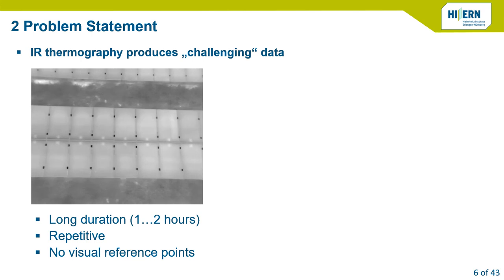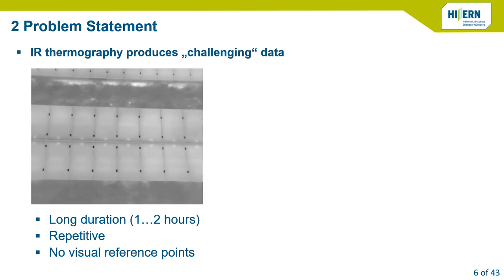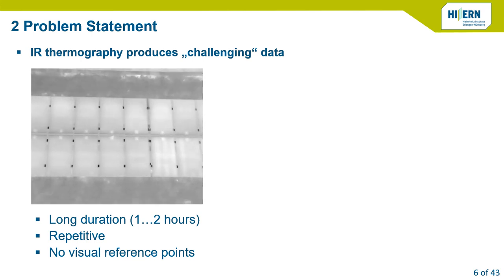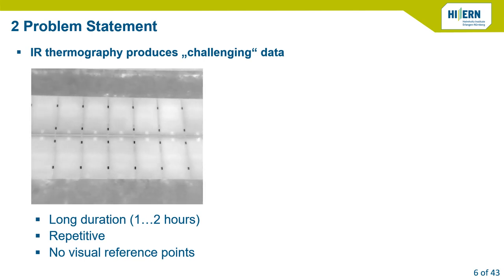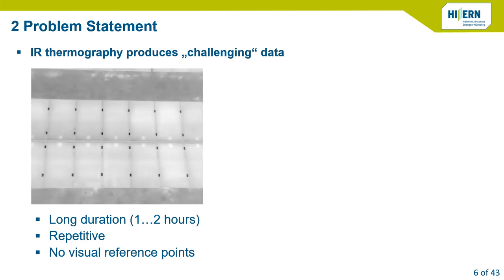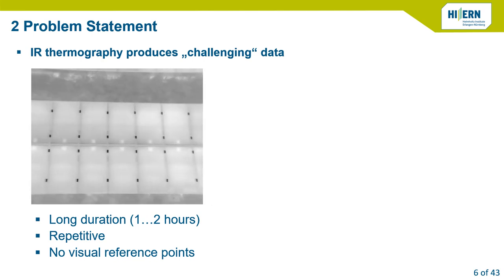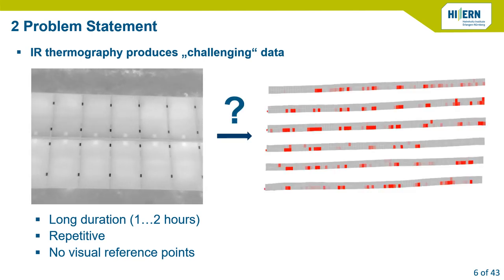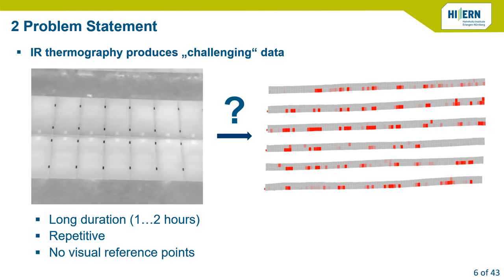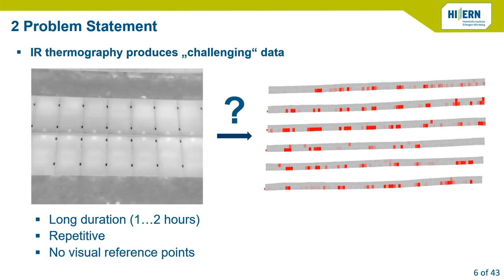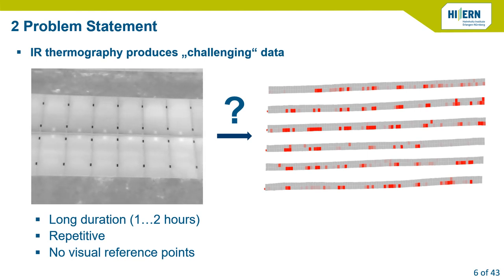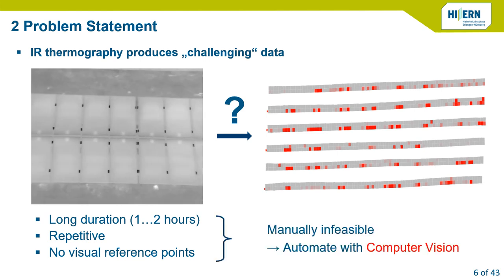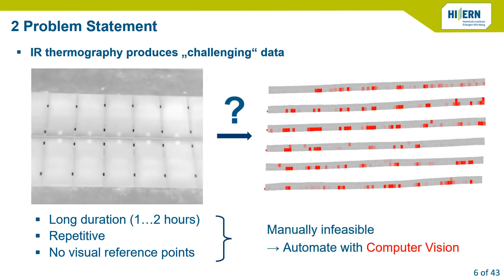This leads us to the problem statement of this project, which is basically large amounts of challenging data being produced. The data is challenging because it's of long duration, highly repetitive, and has no visual reference points — so it's impossible for a human to manually work with it. Instead, we can use computer vision to automate this procedure. We want to get an overview map that can be easily interpreted by a human, highlighting anomalies for further inspection or even directly for repair.